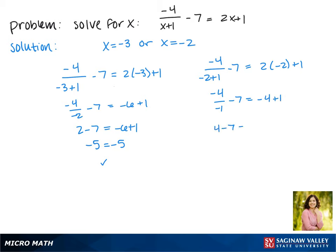Negative 4 divided by negative 1 is positive 4, and this gives us negative 3 equals negative 3.